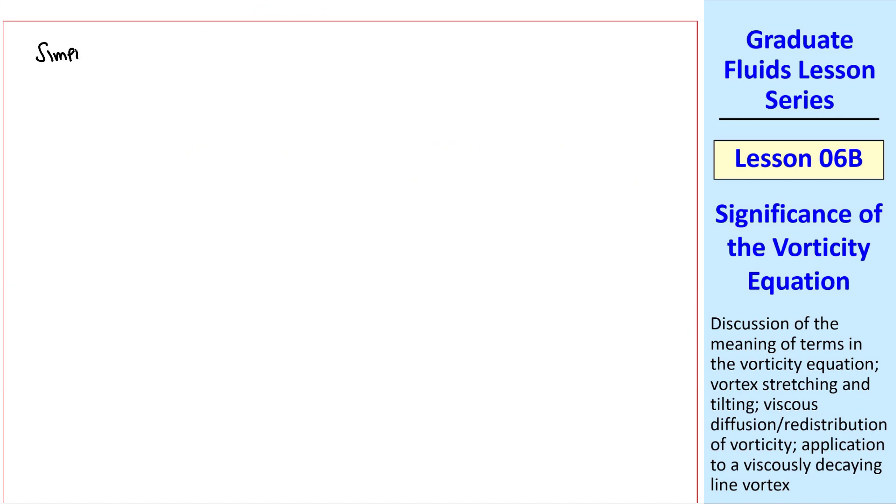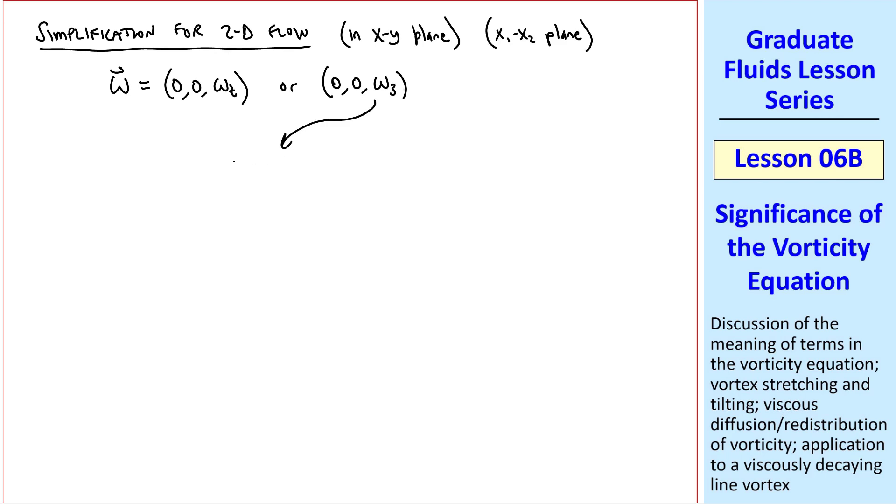Finally, let's make a simplification for two-dimensional flow in the XY plane. The vorticity vector will have a component only in the Z direction. Or in tensor notation, we'll use omega 3 for flow in the X1, X2 plane. In terms of omega 3, the third component of the vorticity vector is the only non-zero one. So d omega 3 dt equals omega j del U3 del Xj plus nu del squared omega 3 del Xj del Xj.